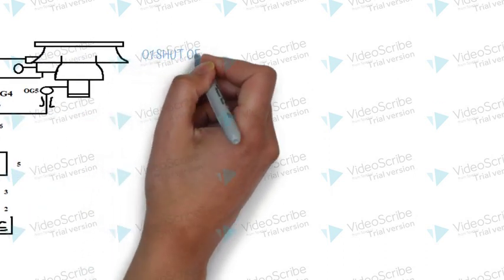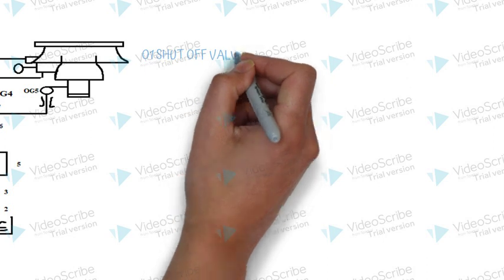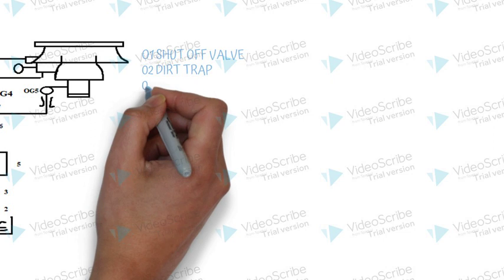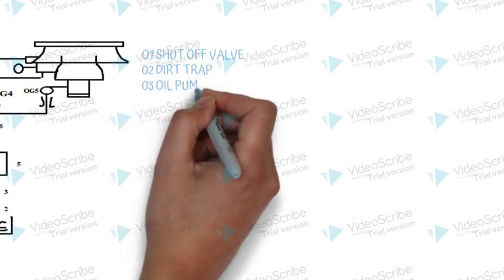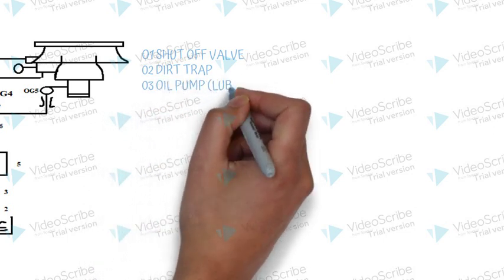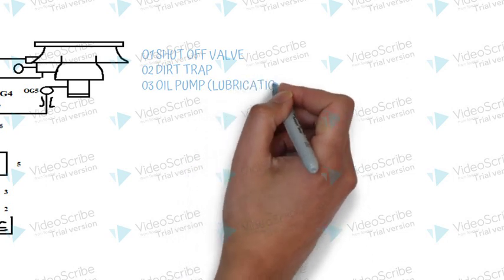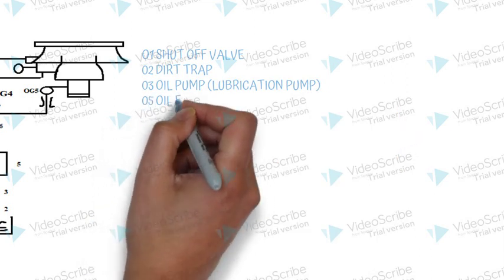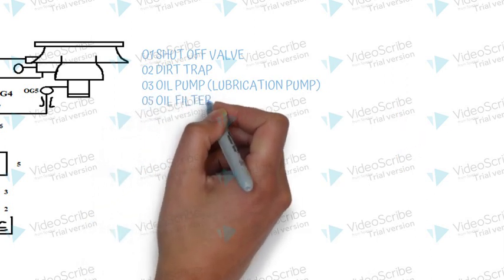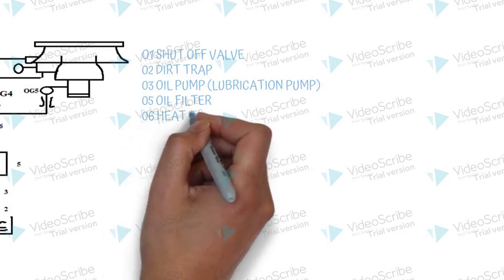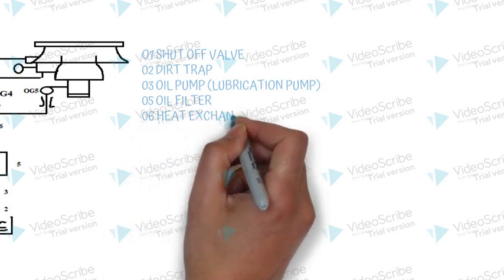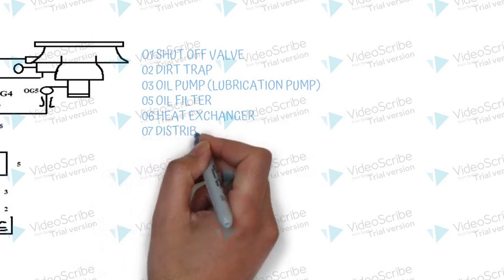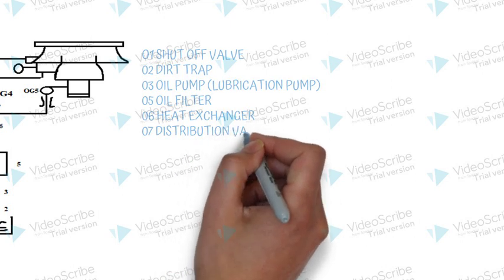Following are the important components of the lubrication unit. The shutoff valve is utilized to cut off the oil supply, enabling maintenance work to be performed safely before the oil reaches the heat exchanger. It's an essential safety measure during maintenance operations. The dirt trap is designed to capture any dirt or contaminants present in the oil. Regular cleaning of the dirt trap helps prevent damage to the lubrication pump and other components, ensuring smooth system operation.